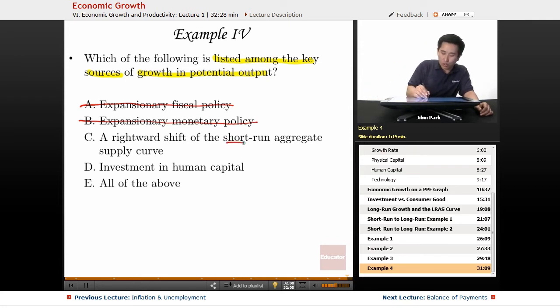A rightward shift of the short-run aggregate supply curve. This has to do more with the reduction of wages, nominal wages.